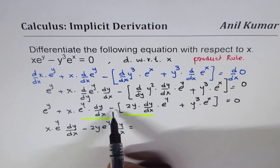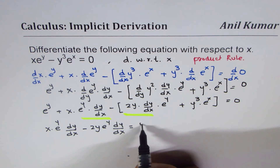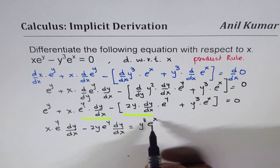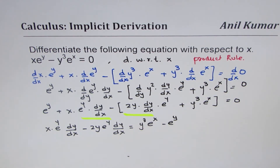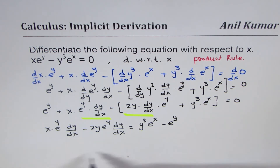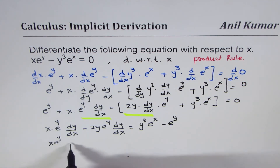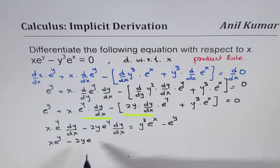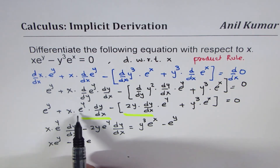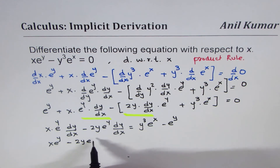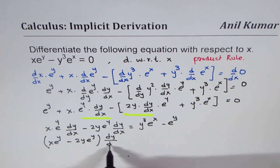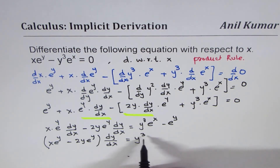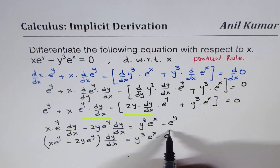Let me take these terms on the right side. This is a negative sign, so I'll take that first — we'll write this as y cubed e to the power of x. And then we'll take minus e to the power of y. So now we can take dy/dx as a common factor: x e to the power of y minus 2y e to the power of y — where e to the power of y is a common factor — all times dy/dx, equal to y cubed e to the power of x minus e to the power of y.